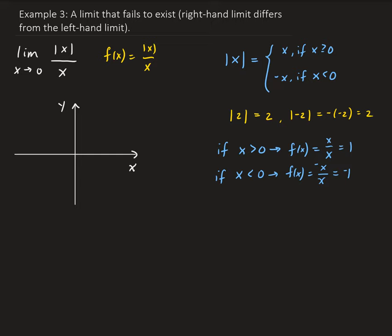To see a concrete example, let's consider x equals negative 5. We plug in negative 5 and get the absolute value of negative 5 divided by negative 5. That gives us positive 5 on top and negative 5 on the bottom, so the result is negative 1. This holds for any x value less than 0. And if x equals 0, the function is undefined because we can't divide by 0.